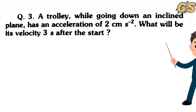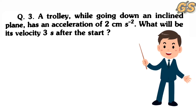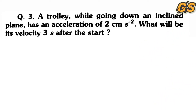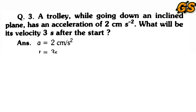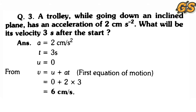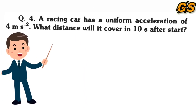Third numerical: A trolley while going down an inclined plane has an acceleration of 2 cm/s². What will be its velocity 3 seconds after the start? Given: a = 2 cm/s², t = 3 seconds, and initial velocity u = 0 (starts from rest). Using v = u + at: v = 0 + 2 × 3 = 6 cm/s.